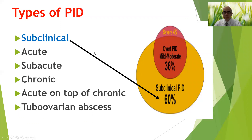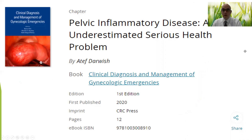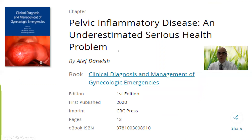PID has different forms and types: subclinical PID, acute PID, subacute PID, chronic PID, and acute on top of chronic tubo-ovarian abscess. Subclinical PID is diagnosed in up to 60% of cases, the manifest form in around 36%, and severe form in 4%. Because of the high proportion of subclinical missed cases, many doctors ignore PID diagnosis in up to 60% of cases, and complications occur without notice. This prompted publication of a book chapter on the hidden forms of PID as an underestimated serious health problem.